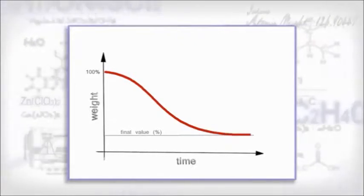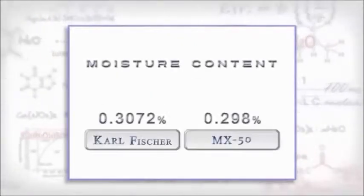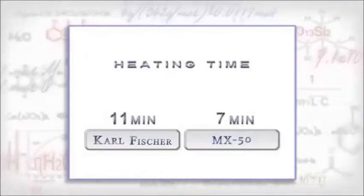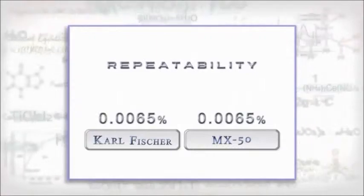A&D analyzers use the thermo-gravimetric or loss-on-drying principle and offer the accuracy of the Carl Fischer technique, but in less time and with better repeatability.